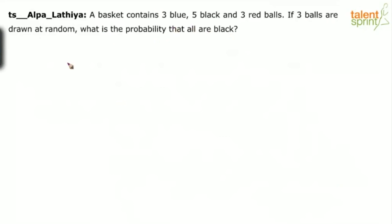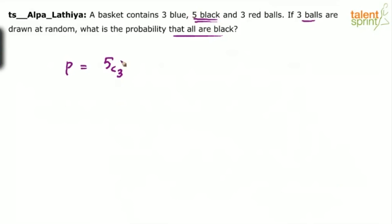You want all the balls to be black. The only choice you have is 5 black balls. Out of these 5, how many should you choose? 5C3. Out of these 5 black balls, we need to choose 3 balls, and the condition says all 3 have to be black. So choose only from these 5 balls. 5C3 is the number of ways in which you can get the desired output.